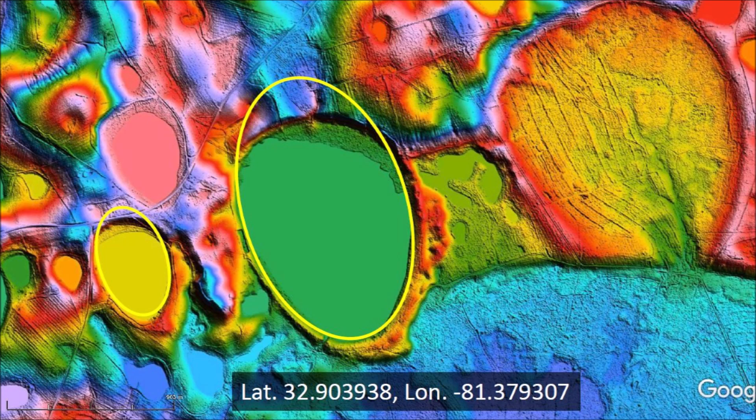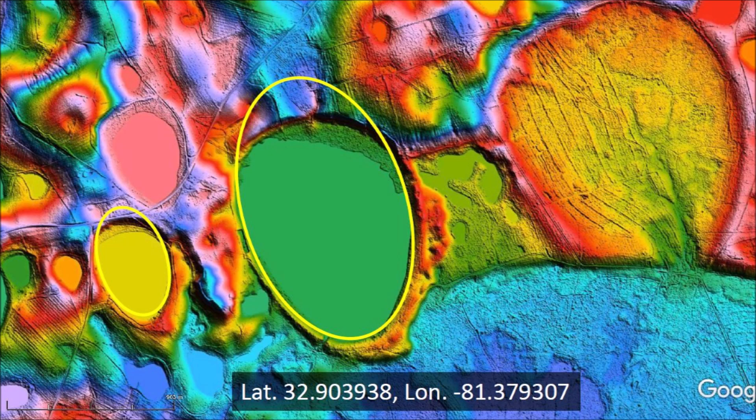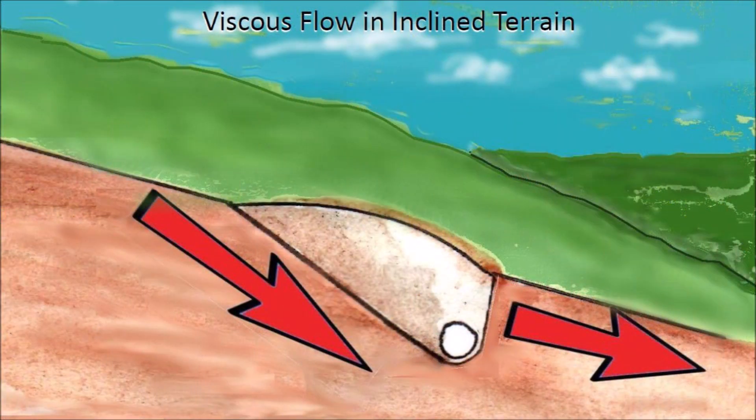To understand why the top half of this bay is flattened, it is necessary to notice that the terrain on which these bays are found inclines southward. A cross-section of an impact shows why the upper part of the bay on inclined terrain is flattened during viscous relaxation. Under the force of gravity all the material flows downhill, but the distortion of the bay is caused because the soil flows faster on the uphill side due to the steeper gradient into the cavity.